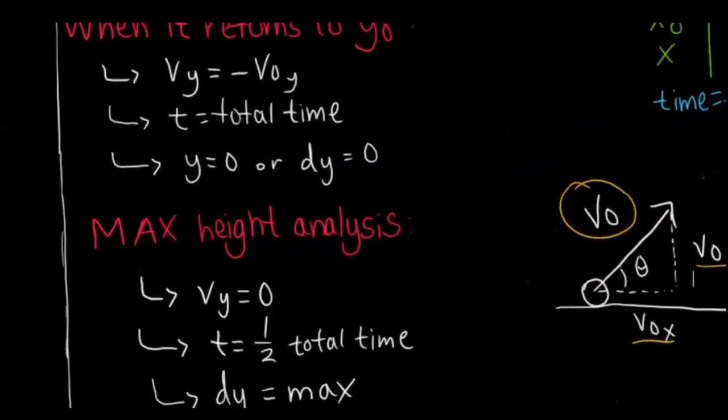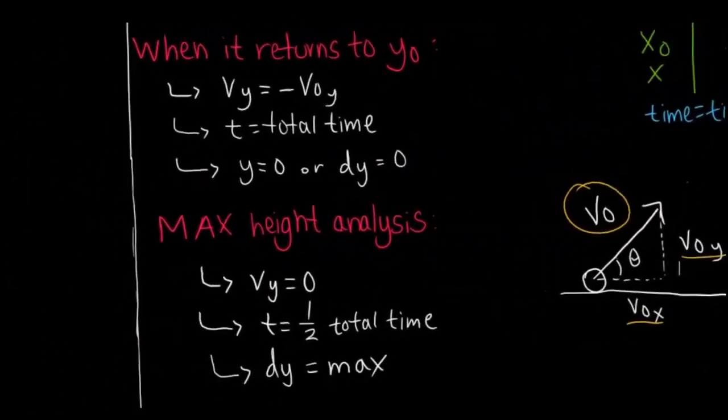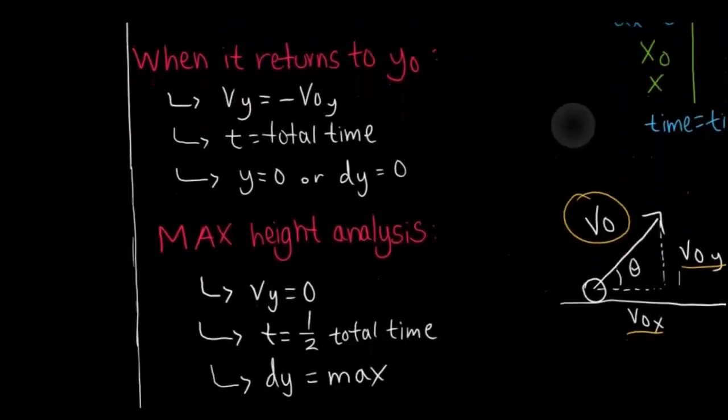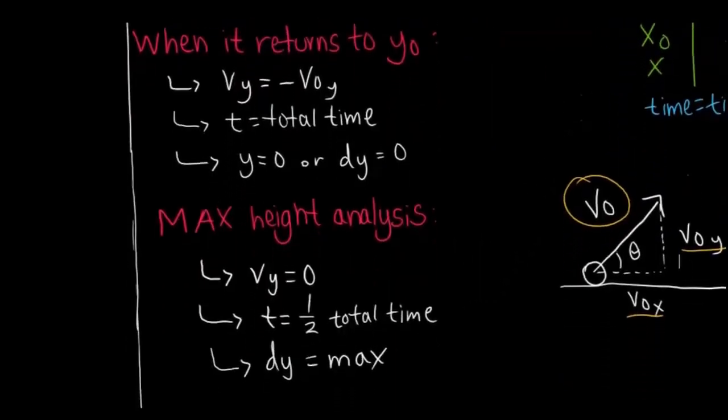Just a breakdown of the different ways you can analyze it. When this angled projectile comes back down to its initial y position, like we said before with the up and down problems, the final velocity would be the same as the initial velocity but negative times total time, and then the displacement would be zero.